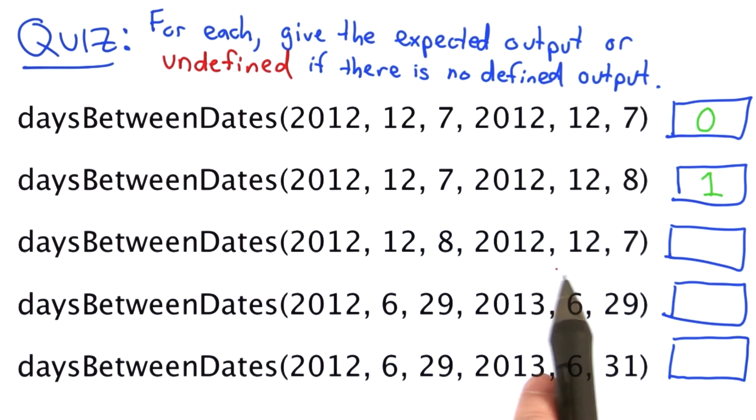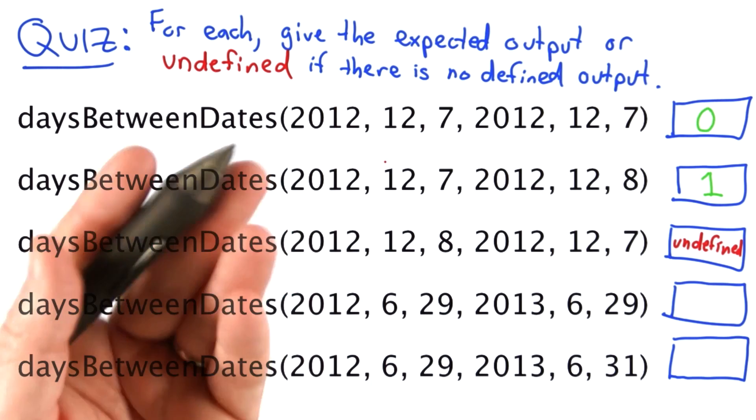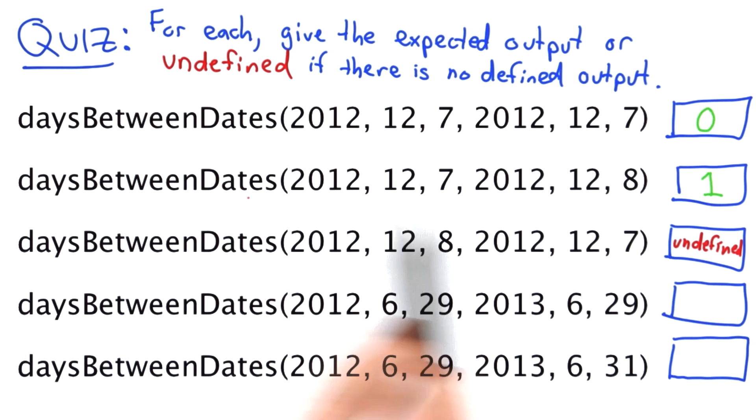For the third one, the second date is before the first date. The way we specify the problem, that's an invalid input. That means the output is undefined, and our procedure could actually be correct no matter what it does for this input.